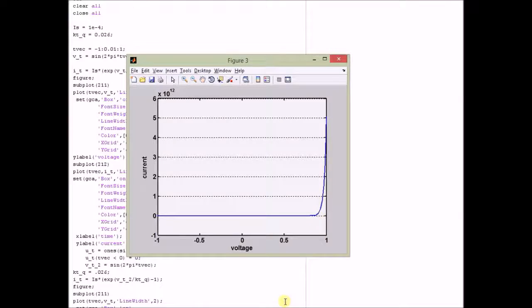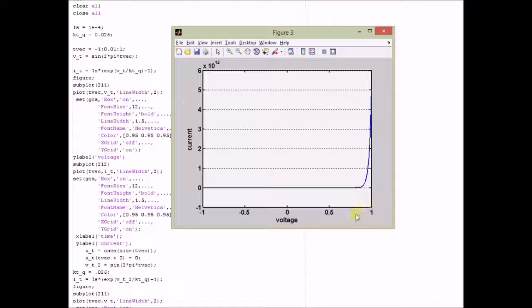In this case, it is equal to one. And we can clearly see that as the voltage V of t approaches one, the current approaches a very large value because of the exponential structure of the relation between input voltage and the output current.